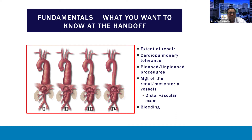To begin with, after surgery, I want to discuss what the fundamentals are that any clinician at the bedside in the ICU will want to know at the time of handoff. The first thing is the extent of repair. Here is the Crawford classification based on the extent of repair. Knowing the specific details — for example, extent 1 and extent 2 aneurysms are more likely to have vocal cord dysfunction, and extent 2s and 3s are more likely to have paraplegia — is important to be able to anticipate what the complications might be.